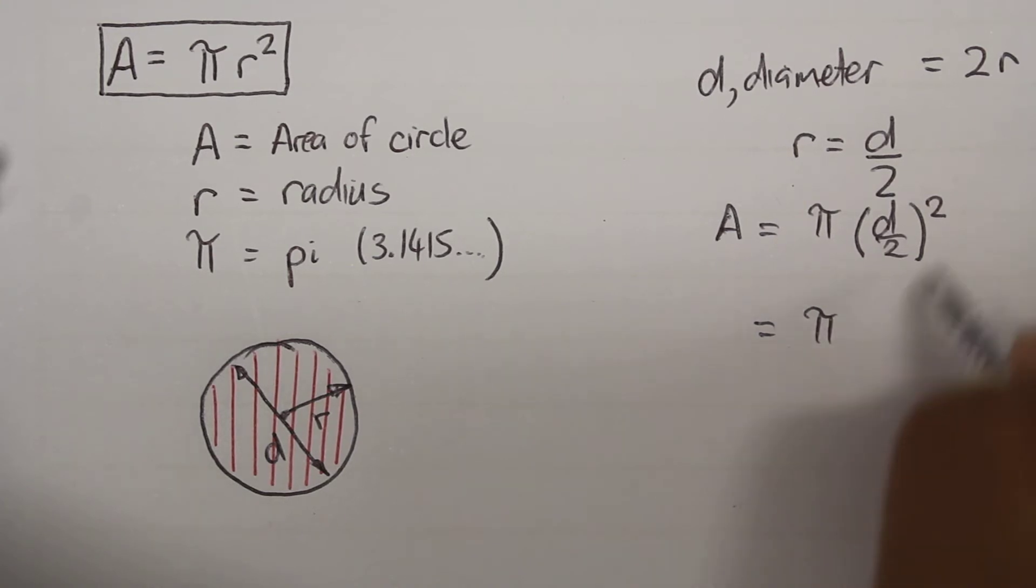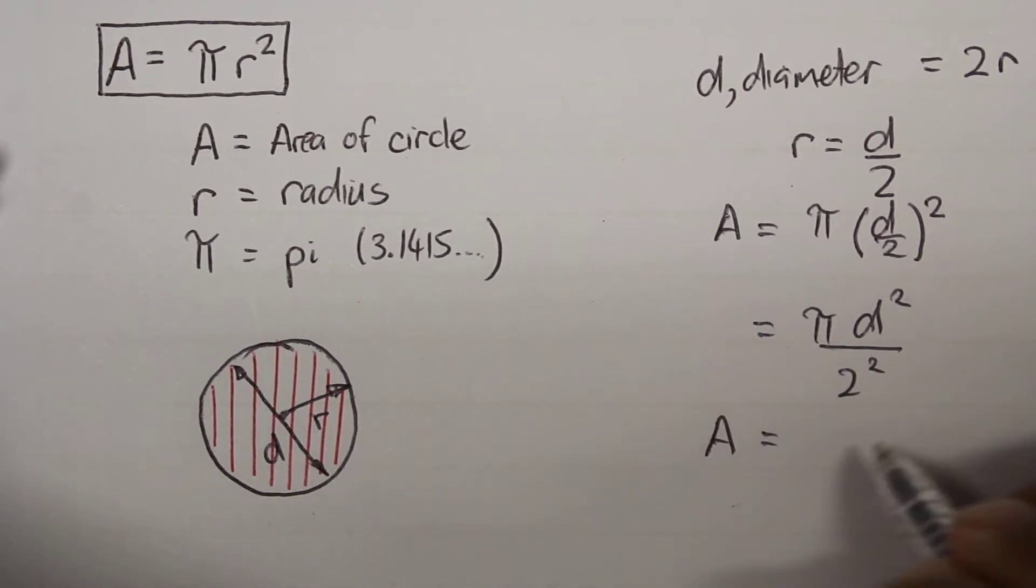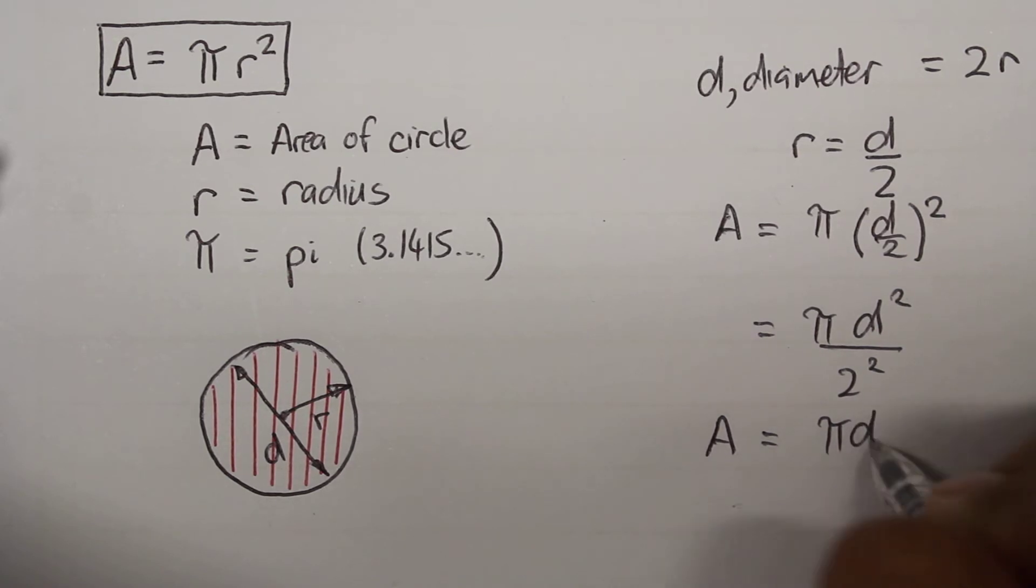We can expand the indice here. So pi d squared over 2 squared. And then from there we get area equal to pi times diameter squared divided by 4.